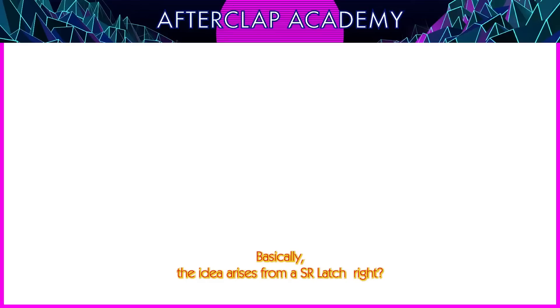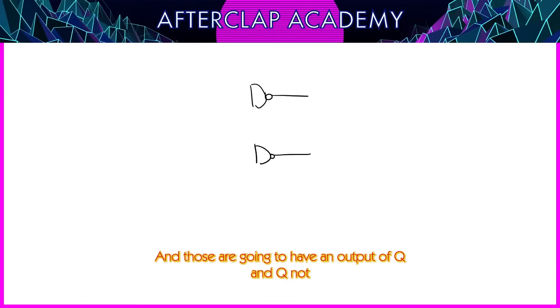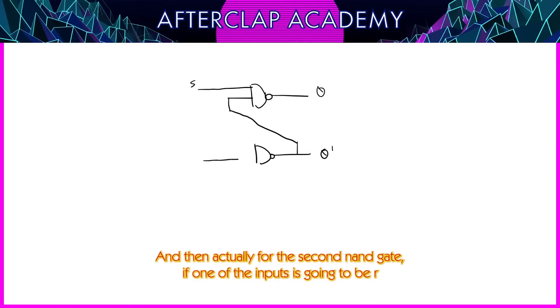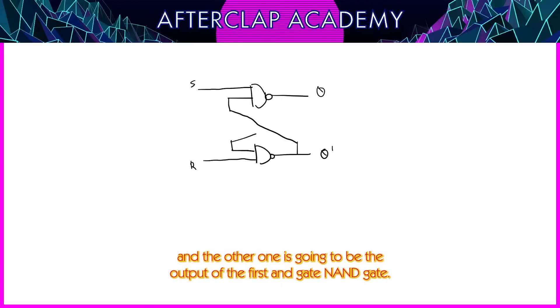Basically the idea arises from an SR latch. You've got to know the structure of an SR latch. In an SR latch you would have two NAND gates just like this one. Those are going to have an output of Q and Q prime. These are the outputs and the inputs. One of the NAND gates has an input of S and the other input of the NAND gate will be the connection of the output to the second NAND gate. And then actually for the second NAND gate, one of the inputs is going to be R and the other one is going to be the output of the first NAND gate. This is what we are having. This is an SR latch.